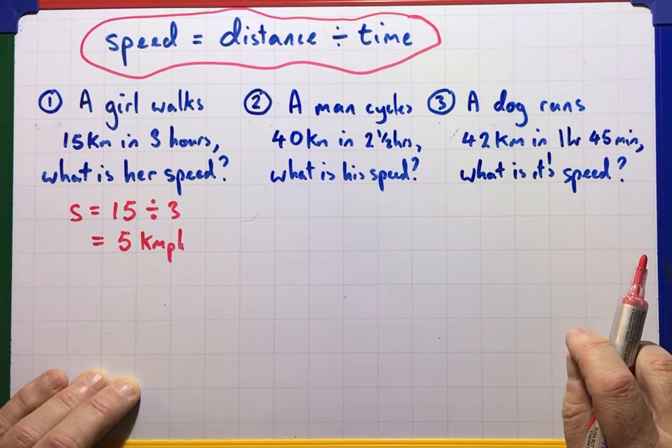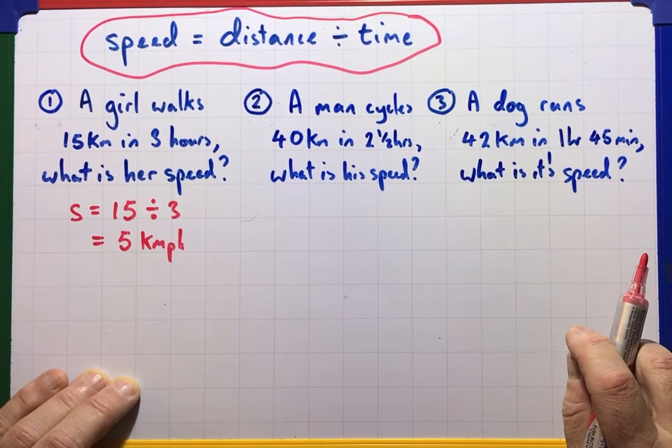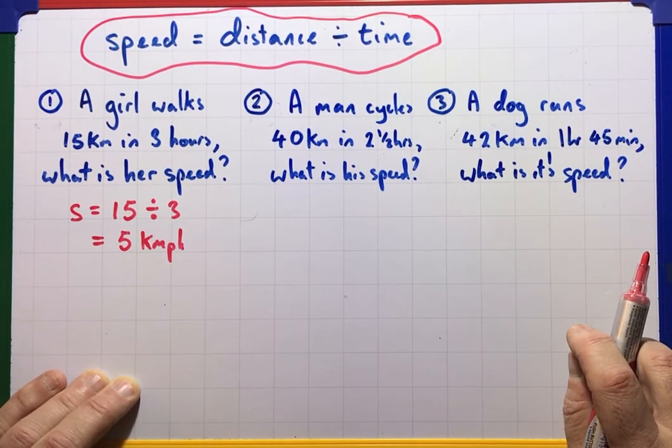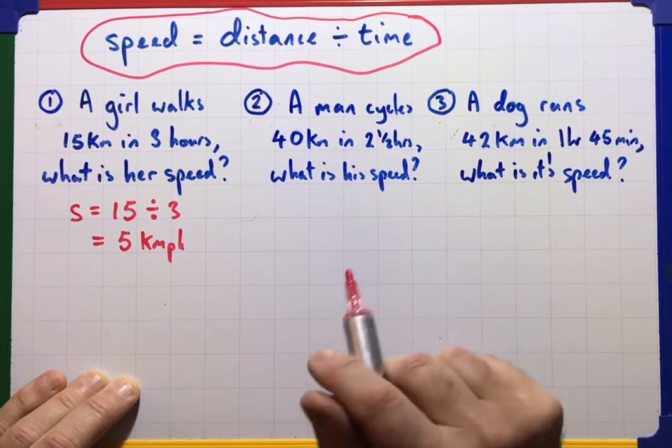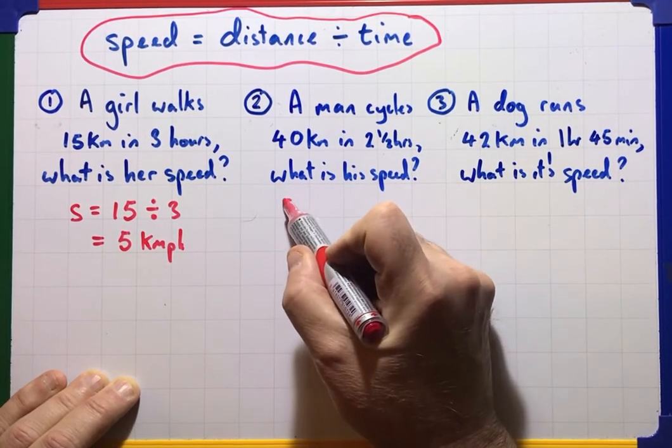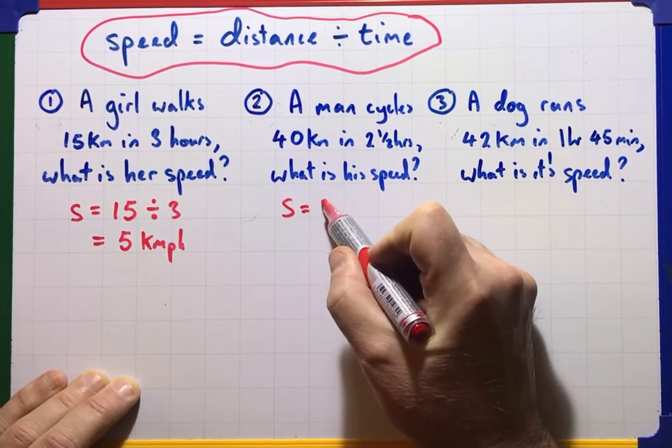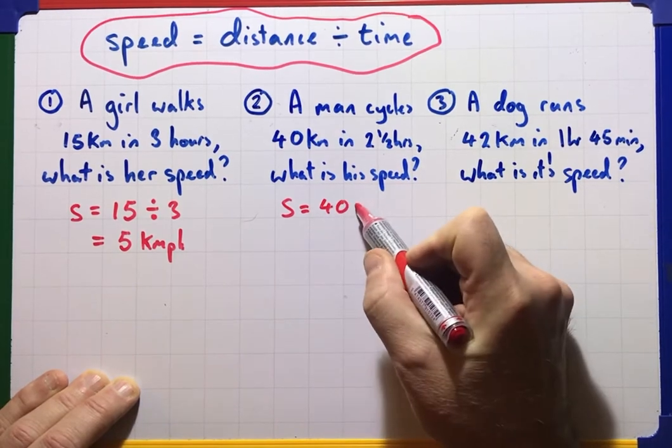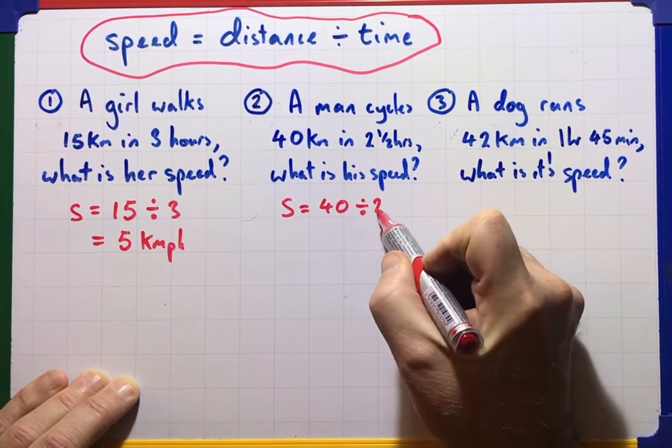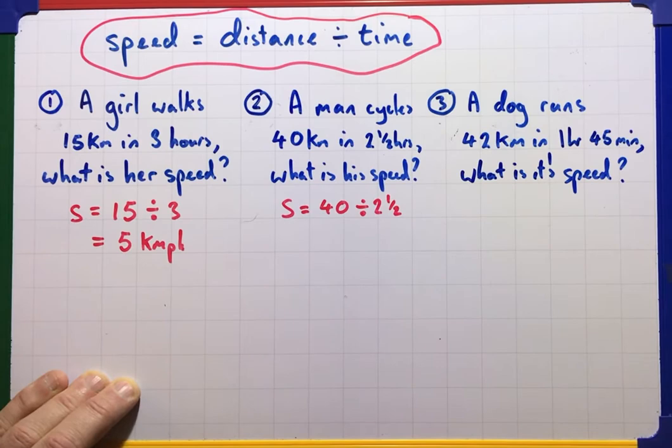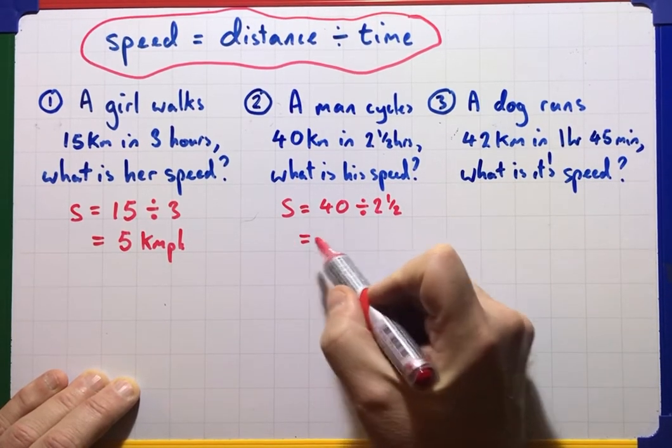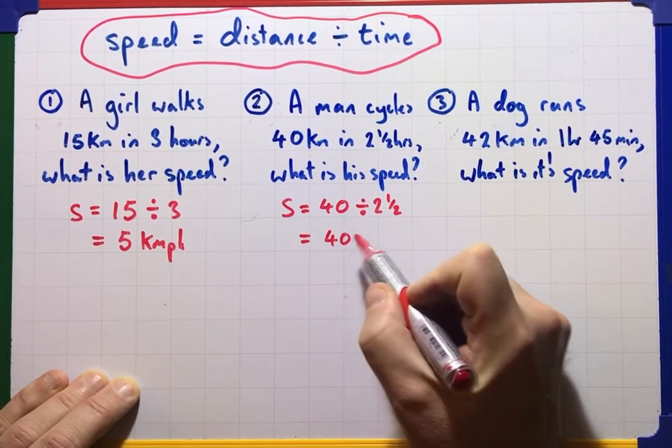Secondly, a man cycles 40 kilometres in 2.5 hours. What is his speed? Right, so the speed is 40 divided by 2.5. If you remember, when we are dividing by a fraction, we need to make it top-heavy first.